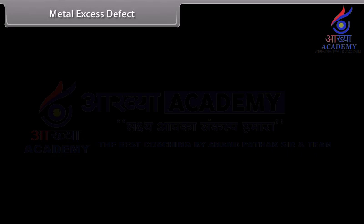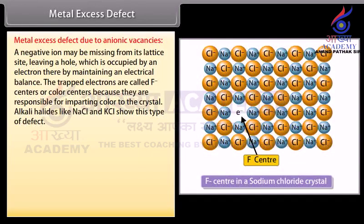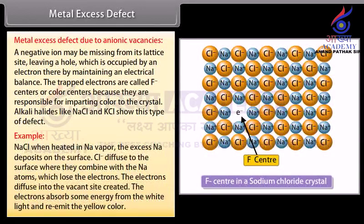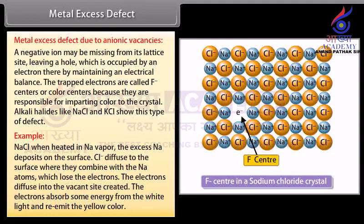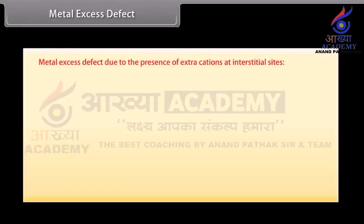Metal excess defect due to anionic vacancies: A negative ion may be missing from its lattice site, leaving a hole that is occupied by an electron, thereby maintaining electrical balance. The trapped electrons are called F-centers or color centers, because they are responsible for imparting color to the crystal. Alkali halides like NaCl and KCl show this type of defect. For example, when NaCl is heated in sodium vapor, excess sodium deposits on the surface; Cl⁻ ions diffuse to the surface where they combine with sodium atoms, which lose electrons. The electrons diffuse into the vacant sites and absorb some energy from white light, re-emitting yellow color.